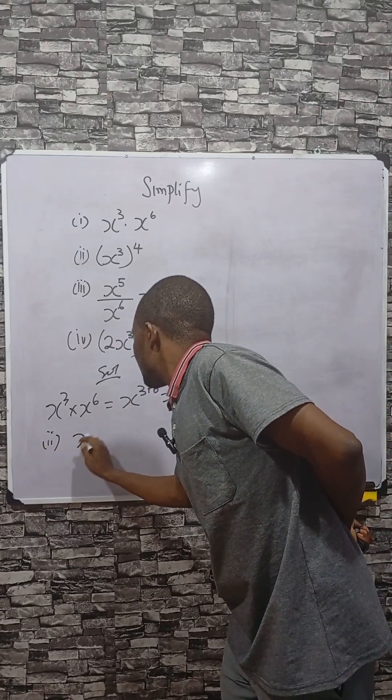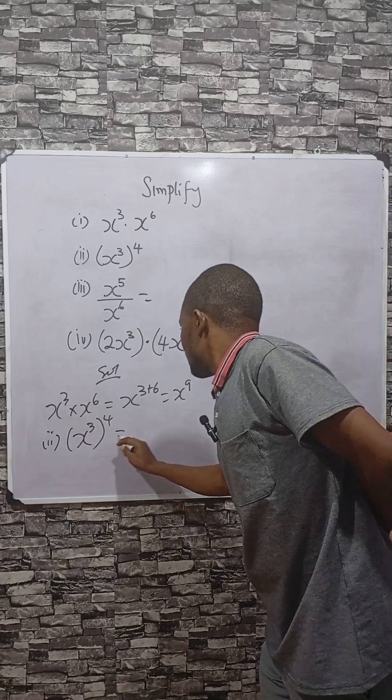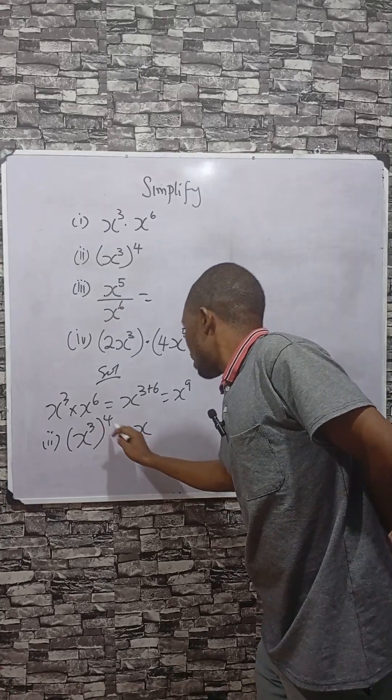Now the second one says if you have x to the power 3 to the power 4. The indices law says the powers can multiply themselves, and that is x to the power 12, because 3 times 4 is 12.